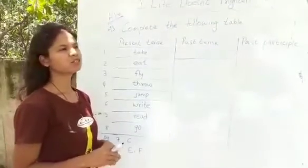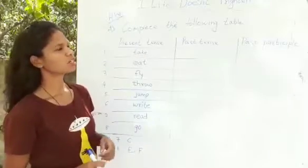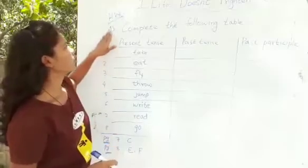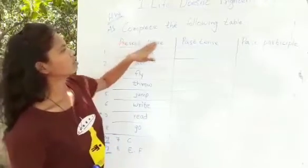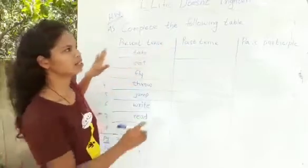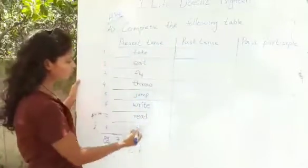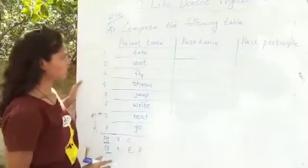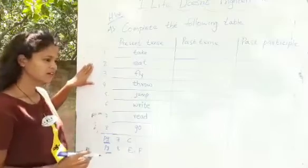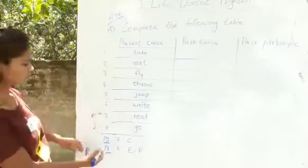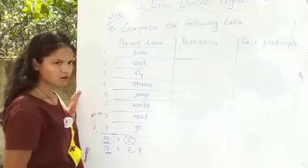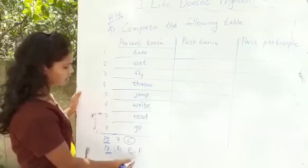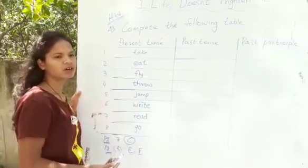I hope you understood the tenses that we have discussed. Here, I am giving you some homework that you have to do. The homework is, you have to complete the tenses that is present, past, and participle. Here, I have given you some words and you have to fill the two dashes. Coming to your page number seven, your C part, that is your homework. And page number eight, E and F part, you have to do it as your homework.